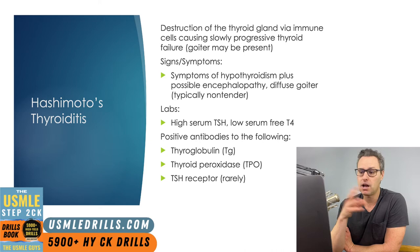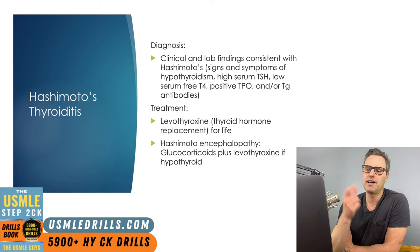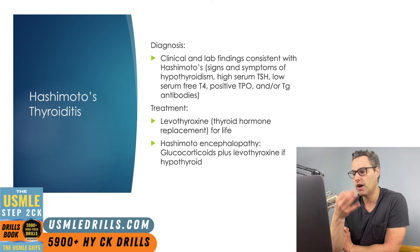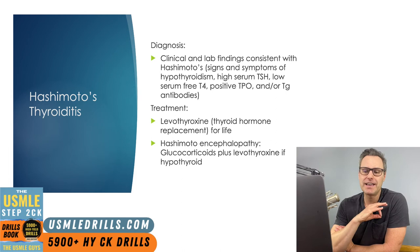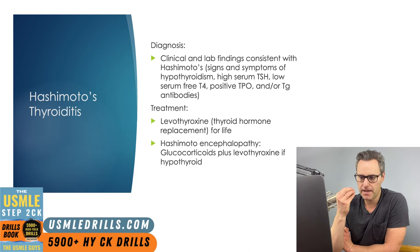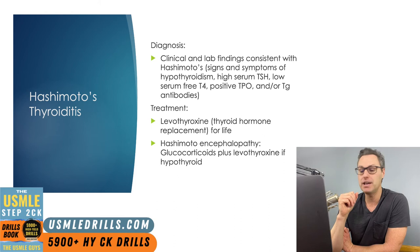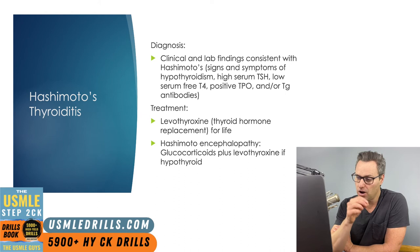Imaging studies like thyroid ultrasound or radioactive iodine uptake are not usually necessary to make the diagnosis. To diagnose, you want symptoms of hypothyroidism with high serum TSH and low free T4, as well as positive TPO and/or TG antibodies. Treatment goals include eliminating symptoms of hypothyroidism and decreasing goiter size while avoiding too large a dose that causes iatrogenic thyrotoxicosis. We achieve this by titrating levothyroxine until TSH is within normal range. If the patient has Hashimoto's encephalopathy, we give glucocorticoids, as the cause is thought to be antibody-immune mediated rather than an effect of the hypothyroid state.